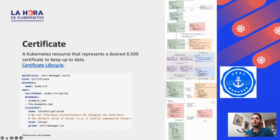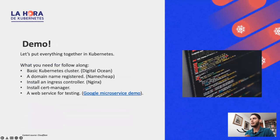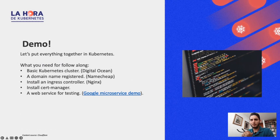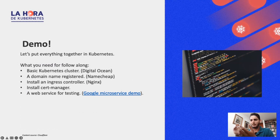Before we do that, let's check if we have any secrets with kubectl get secret. We have some secrets but not the ones we need — specifically the store-demo secret is not there. Let's move on and show you the certificates: no certificates yet. So how are we going to create the certificate? It's going to be automatic.